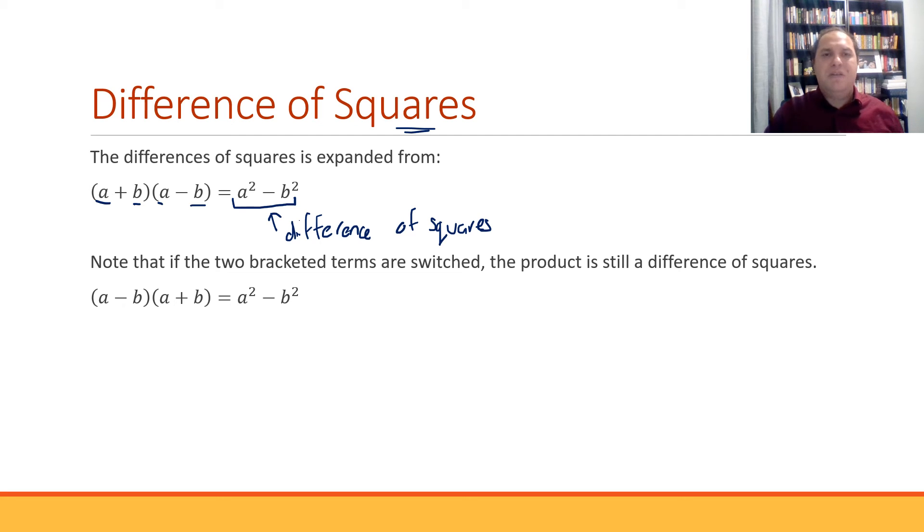And this rule we can use to quickly expand things of this form, where you've got a plus b and a minus b. You can just go straight to a squared, that first term squared minus b, that second term squared. And notice it also works if it's switched around. So if you've got a minus b and a plus b, the order's switched, you still get the same expression when you expand it.